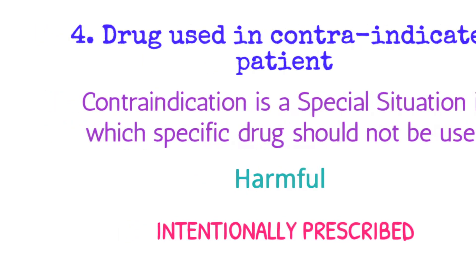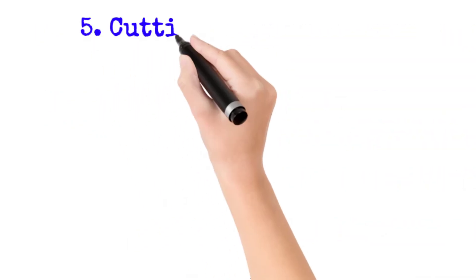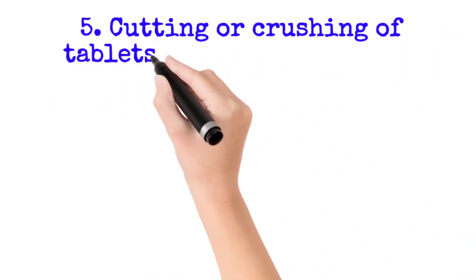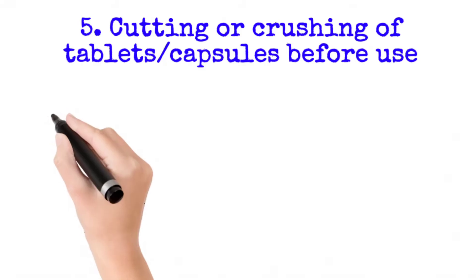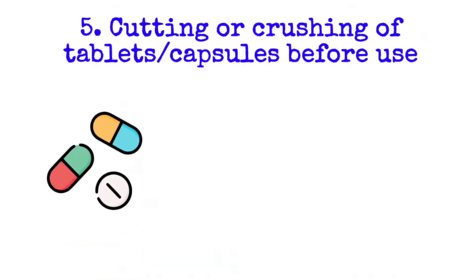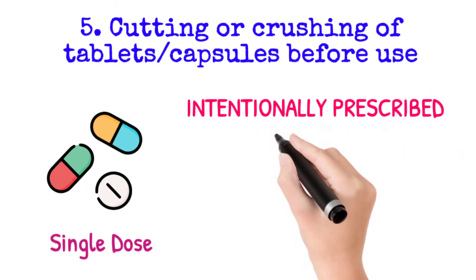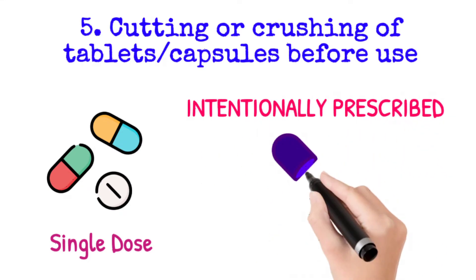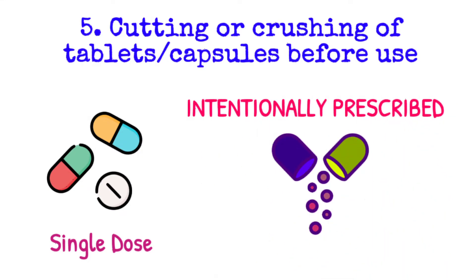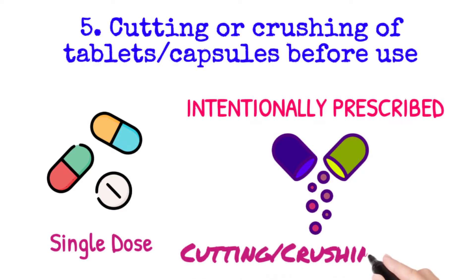The next scenario is cutting or crushing of tablets or capsules before use. For example, any tablet approved to be consumed whole as a single dosage regimen, however, the doctor intentionally prescribed that tablet to be cut or crushed before use. This is called drug use by cutting or crushing of tablets or capsules before use, and this scenario is treated as off-label use.